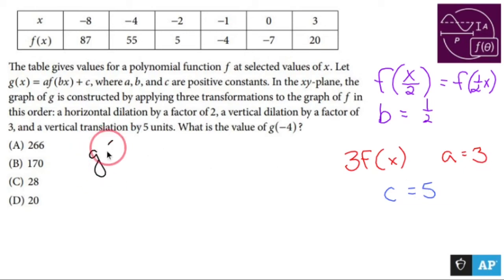So g of x is going to be three f of one half x plus five.